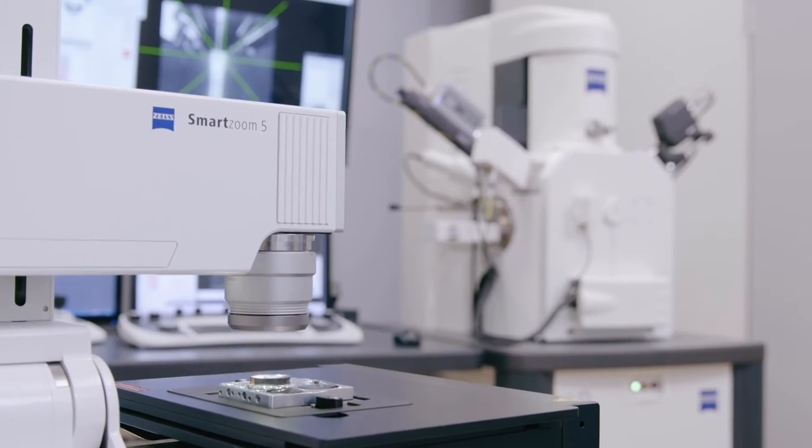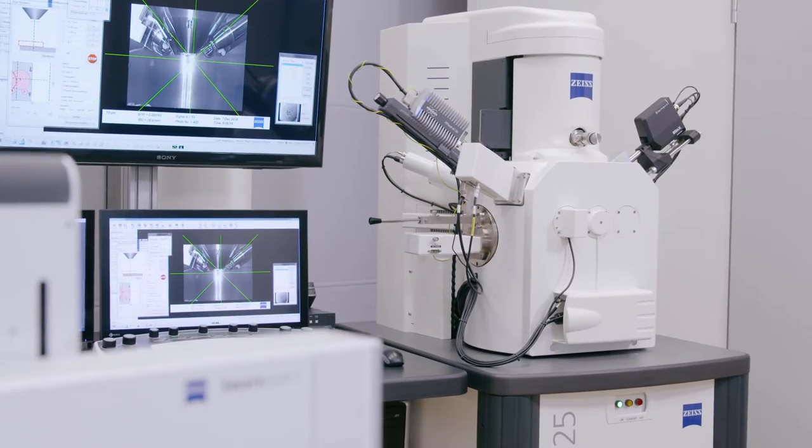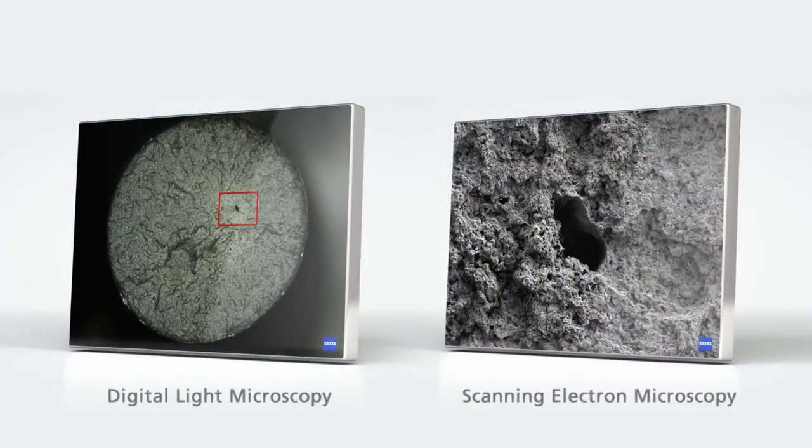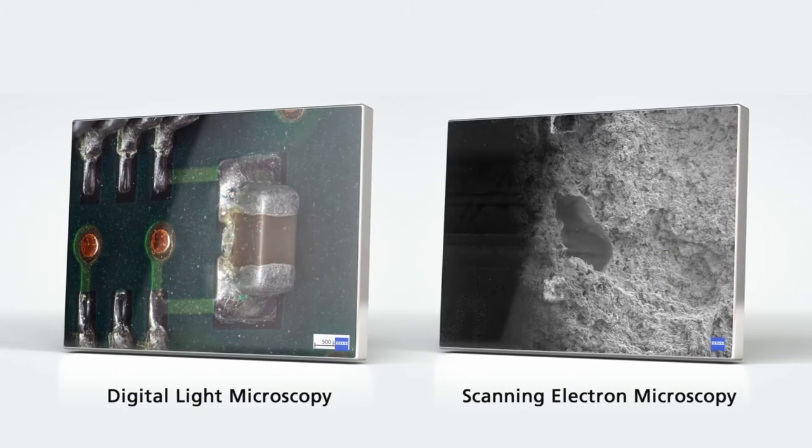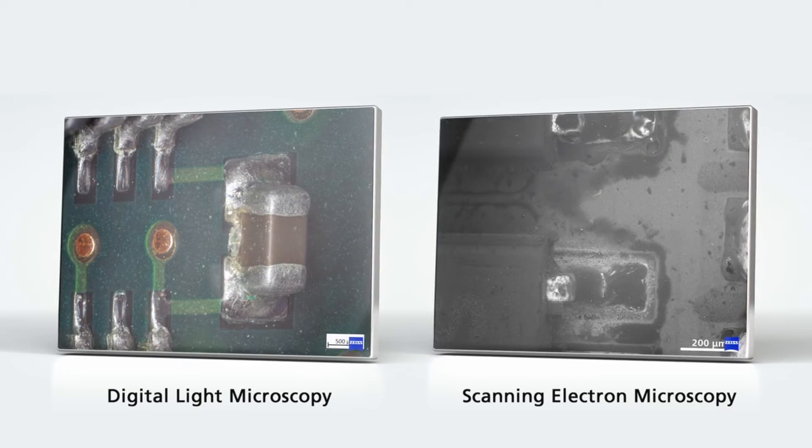Light and electron microscopy are two highly developed technologies that deliver complementary information. When used together in a correlative workflow, they can provide new insights and comprehensive characterization of your samples and workpieces in industrial quality assurance and materials research.